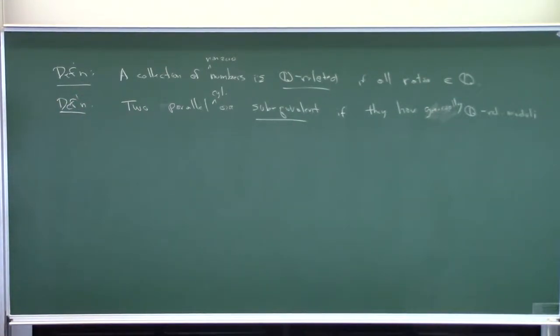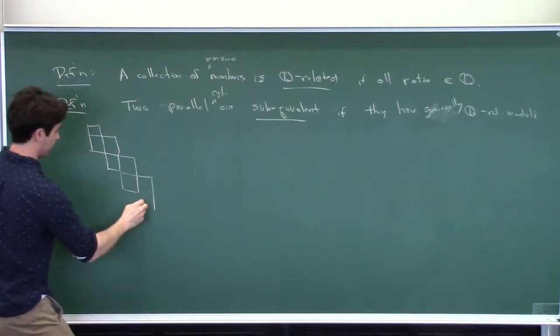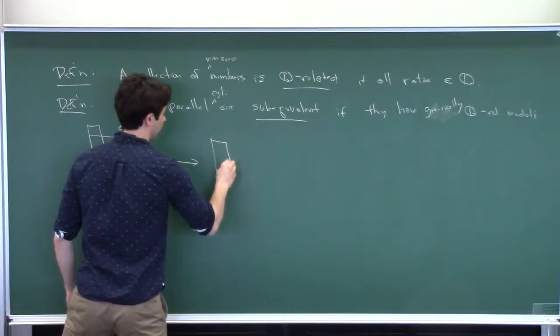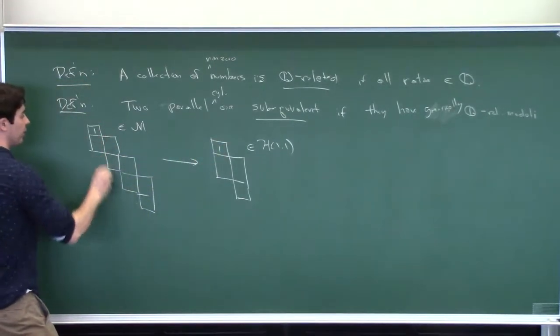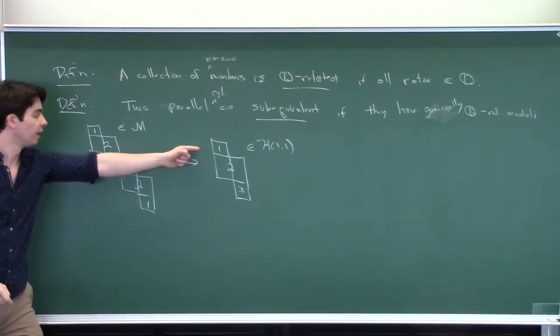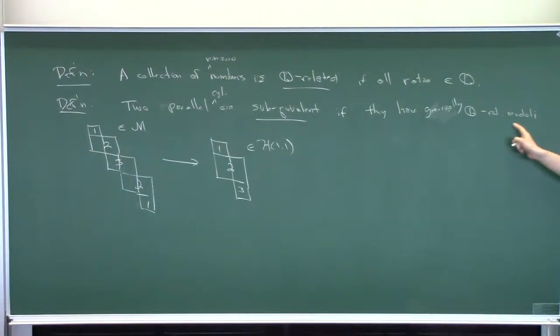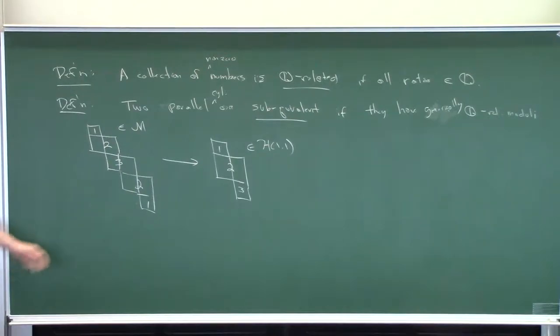So, why is this a good definition? Well, if the theorem is true, then here's what we expect. If I take some sort of surface, yeah, like that, inside of M, then what I'm expecting, what I'm anticipating, is that this is going to be the cover of something living inside of H1. So, okay, this cylinder here has two pre-images, this cylinder here has two pre-images, and this cylinder here has this one pre-image. And if you're in the pre-image of a given cylinder, then you not only are always parallel to everything else that's in the pre-image of that cylinder, but you and all your friends have generically q-related moduli.